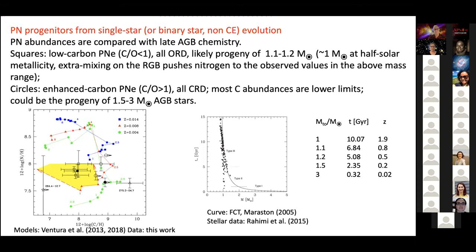We use the models from Ventura et al. to get an estimate of the mass of the progenitor. And then from the evolution of the fuel consumption theorem of Maraston and Renzini et al., we found the time — the age of the star. And from the age of the star, we infer a likely redshift. So here we have a bunch of these targets that, when they were formed, the galaxy was comparable to a Z equal two or Z equal one redshift galaxy. So we can put those probes into a gradient work — not yet because we have only five stars — but to constrain the gradient work. So it's really a successful experiment.